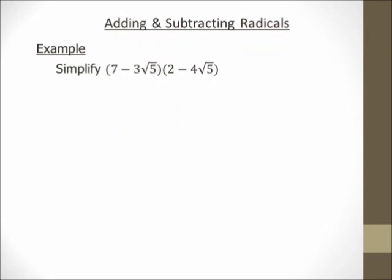Hi there, it's me, Mr. B. We're going to simplify the quantity 7 minus 3 square root of 5 times the quantity 2 minus 4 square root of 5. Very similar to the last example, but now instead of a coefficient of 1 in front of the radical, I have a 3 and a 4. This is a FOIL problem — we're double distributing. So let's distribute the 7: 7 times 2 is 14. And 7 times negative 4 square root of 5 is like 7 times negative 4x — multiply the coefficients and leave the radical. So that's negative 28 square root of 5.